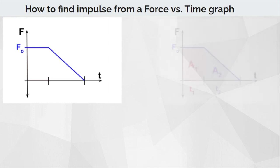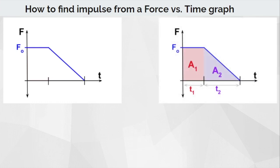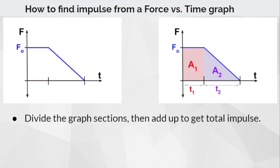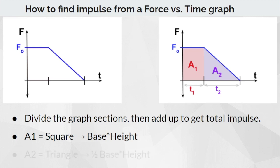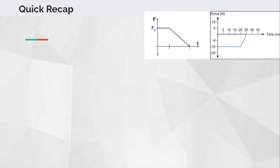Here's the graph split into two sections for the non-constant force. I have one section of area and another section of area — the red part, A1, is a rectangle, and A2 is a triangle. The area of a rectangle is base times height, and the area of a triangle is one-half base times height. Areas below the x-axis represent negative impulse, and areas above the x-axis represent positive impulse.